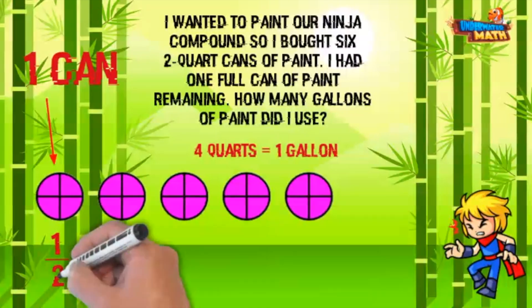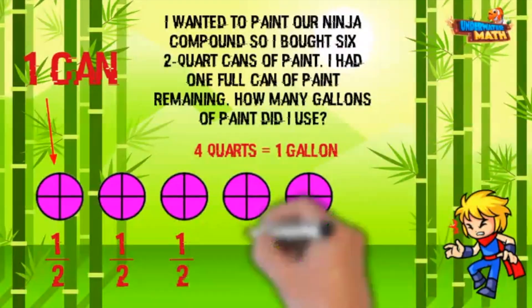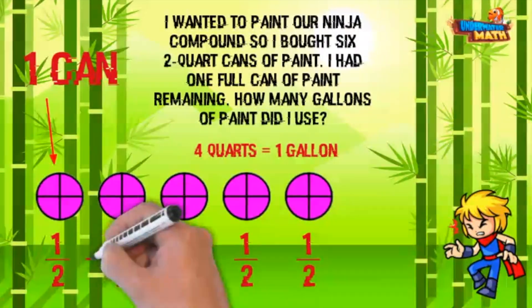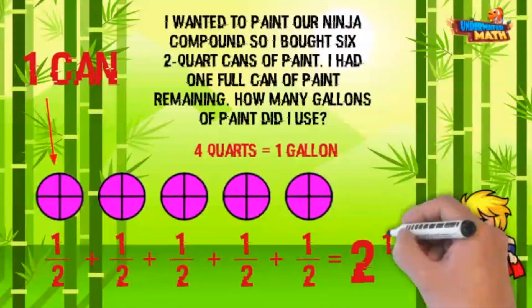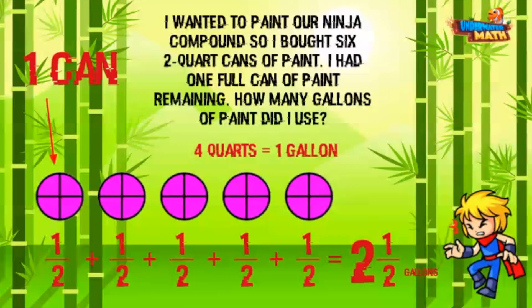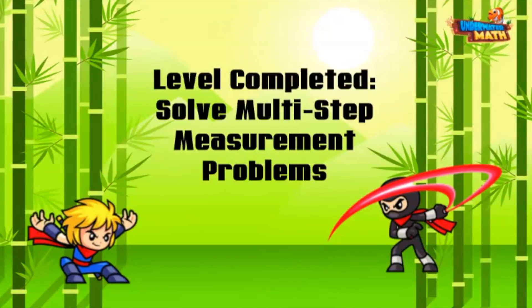He used a total of five two-quart cans. There are four quarts in a gallon, so each can represents one half of a gallon. One half plus one half is one, plus another one is two, plus one half is two and one half gallons. Wow, that was a close one! Thanks for helping me advance through solving multi-step measurement problems. See you at the next level!